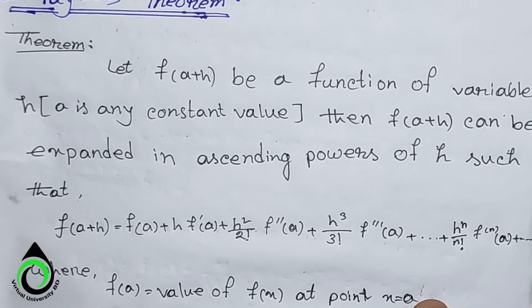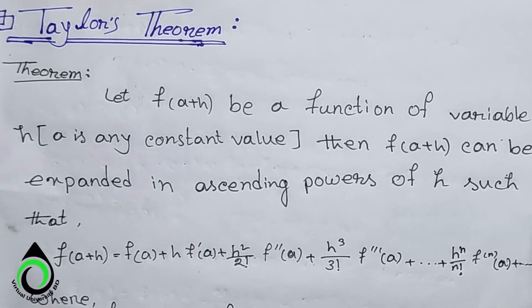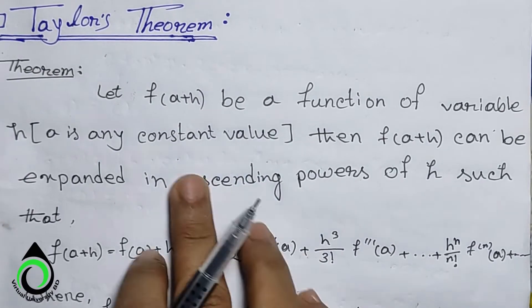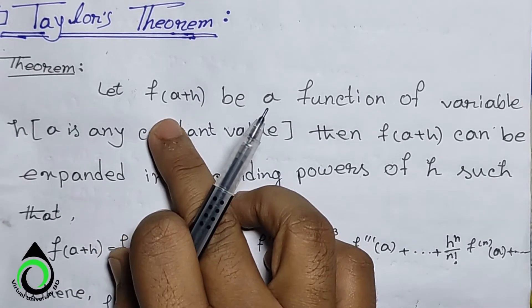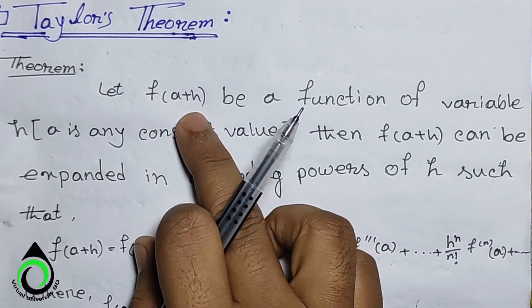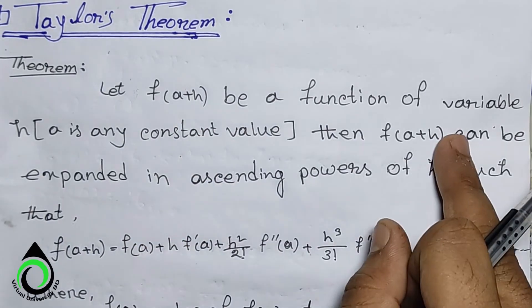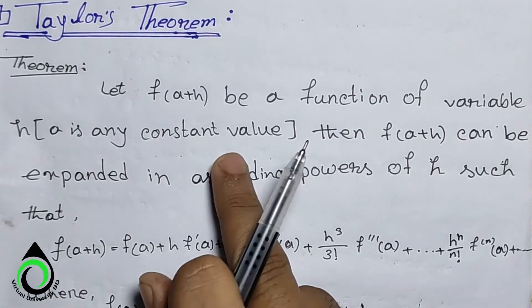Ethereum-ta amadar boulthi kii chachche? Ethereum-ta amadar boulthi chachche j, aamadar ka chakhe function da hoche, jeta hoche aamadar f of a plus h, ar jekhaan h hoche aamadar variable, ar e hoche aamadar constant value.